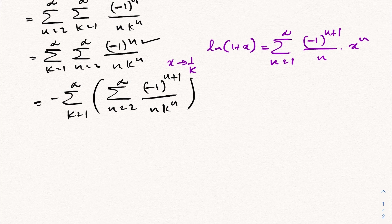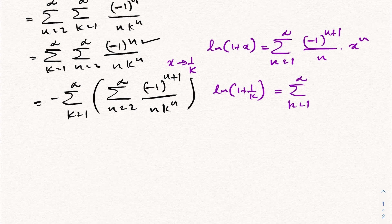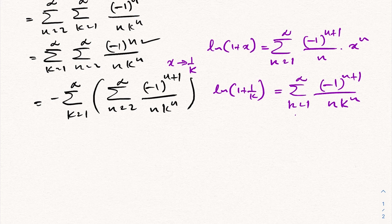If we plug in x equals 1 over k, we get the natural log of 1 plus 1 over k equals the infinite sum from n equals 1 to infinity of minus 1 to the n plus 1, over n times k to the n. So we have identified this Taylor series with x replaced by 1 over k.